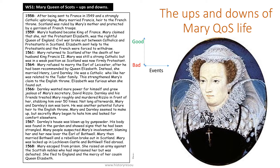By 1567, Darnley is dead - his house has been blown up and it looks like he was strangled. Mary and her new lover, the Earl of Bothwell, are seen as involved in the murder, resulting in Mary's imprisonment in Scotland and Bothwell leaving the country. By 1568, Mary escapes from prison but is defeated in battle and forced to flee to England, to the mercy of her cousin Queen Elizabeth, who puts her under house arrest.